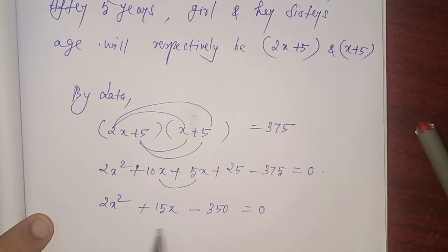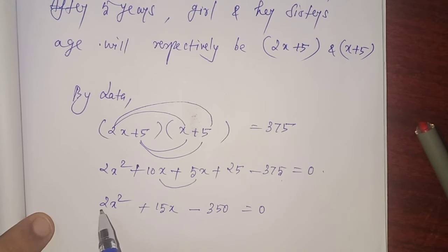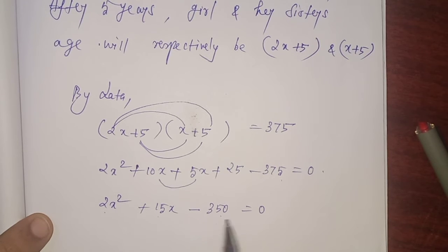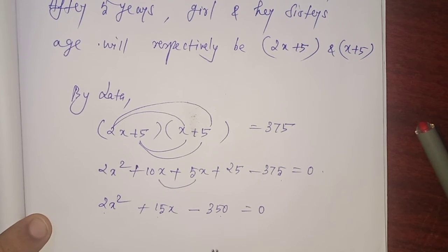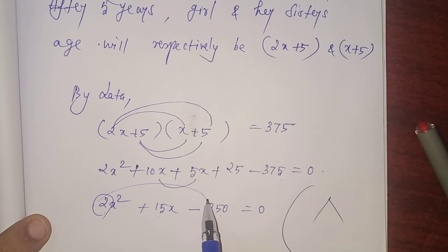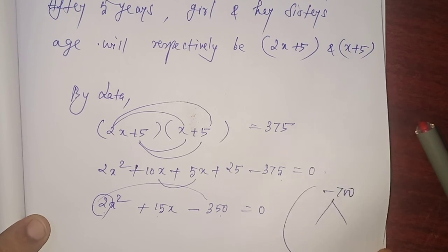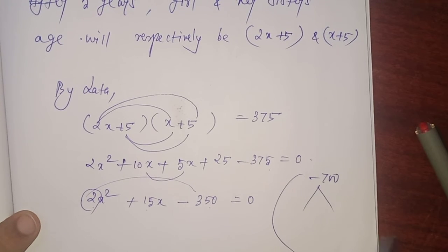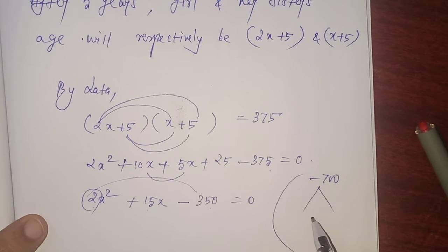Before factorizing. Here, 2. Here, 15. Here, 350. Is there any chance of dividing by a common number? No chance at all. You have to verify first, then proceed. Product: coefficient of x squared is 2 into minus 350 is minus 700. And the coefficient of x is 15.